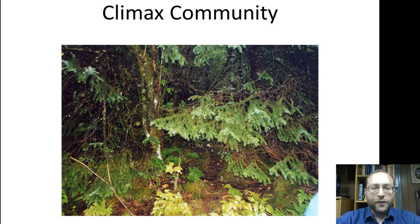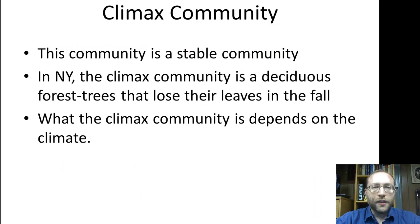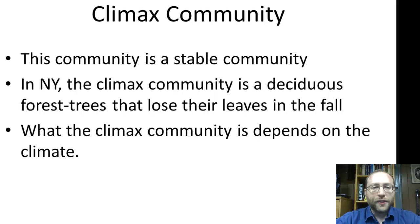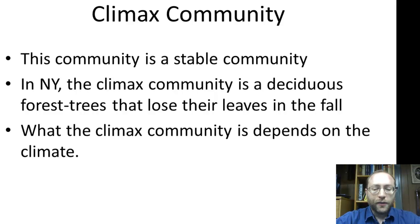As you see here, the trees are very different — these are evergreen trees, which is the climax community in Alaska. The climax community is a stable community; it's the last one in the sequence. In New York, the climax community is deciduous trees — trees that lose their leaves in the fall. These tend to be things like tulip trees, oak trees, or beech trees. If you go to Alley Pond Park in Queens, you can get a fairly good idea of what a climax community in New York looks like. Inwood Park in Manhattan is the best one.